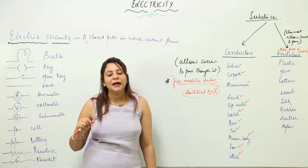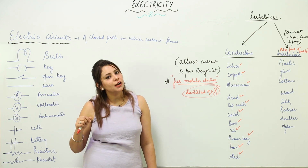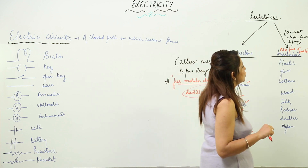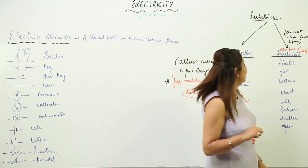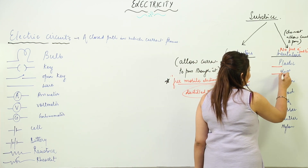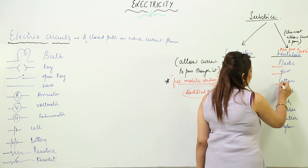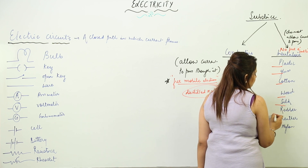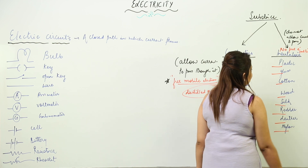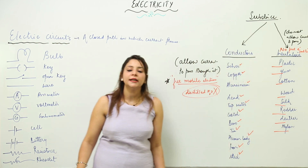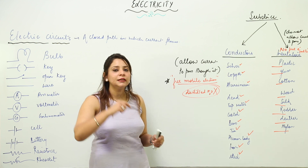Anything which possesses ions or has free mobile electrons is a good conductor of electricity. Insulators, which do not have free mobile electrons, include plastic, glass, cotton, wood, silk, rubber, leather, and nylon. These all are insulators — they do not conduct electricity.